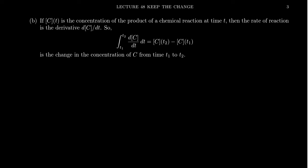Let's look at another example from chemistry. If we take C of T to represent the concentration of a product of some chemical reaction over time, then the rate of the reaction, so how quickly is this reaction happening, if we look at the derivative of concentration with respect to time, well, that's the derivative here, the rate of the reaction.